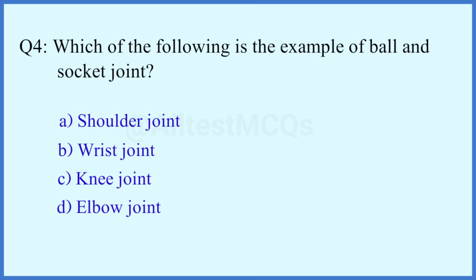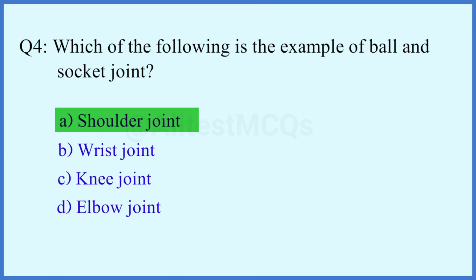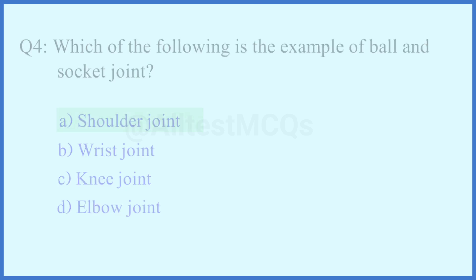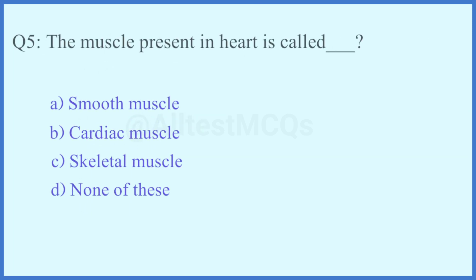Question number 4. Which of the following is an example of a ball and socket joint? The right answer is option A: Shoulder joint.